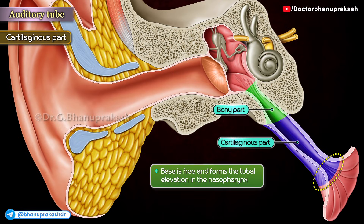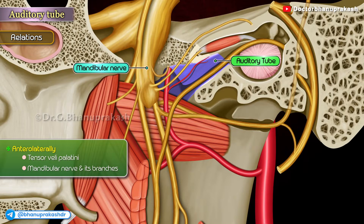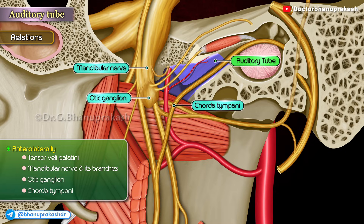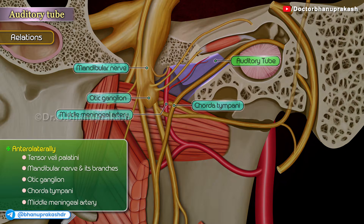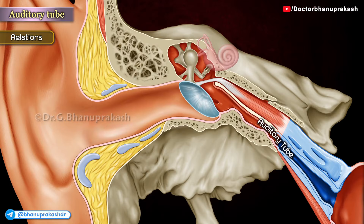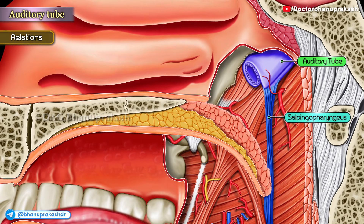The base is free and forms the tubal elevation in the nasopharynx. Relations of the cartilaginous part: Anterolaterally — tensor veli palatini, mandibular nerve and its branches, otic ganglion, chorda tympani, middle meningeal artery, and medial pterygoid plate. Posteromedially — petrous temporal and levator veli palatini. The levator veli palatini is attached to its inferior surface and the salpingopharyngeus to its lower part near the pharyngeal opening.